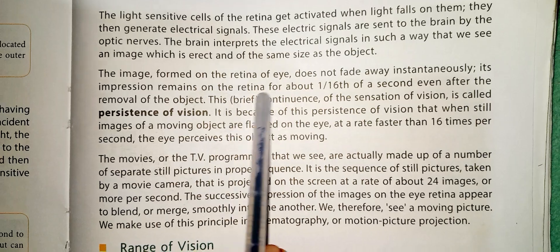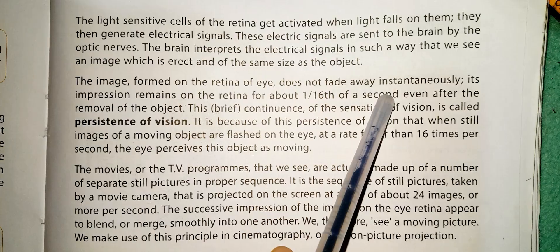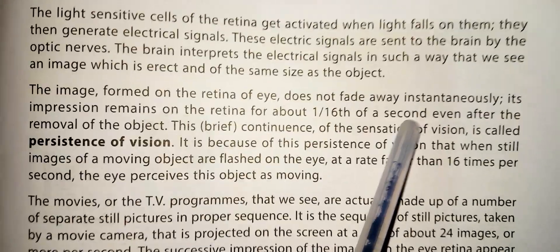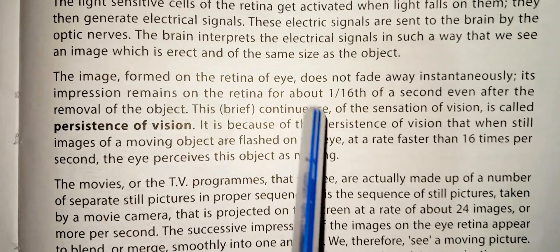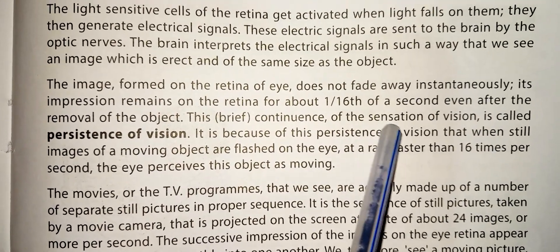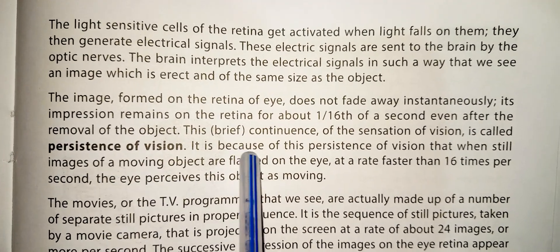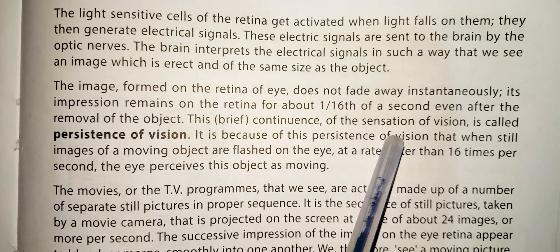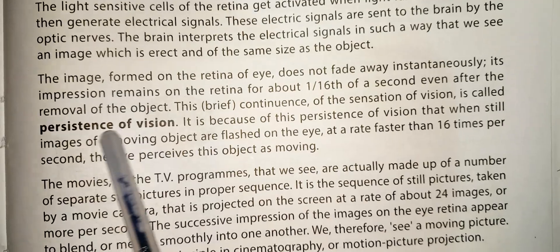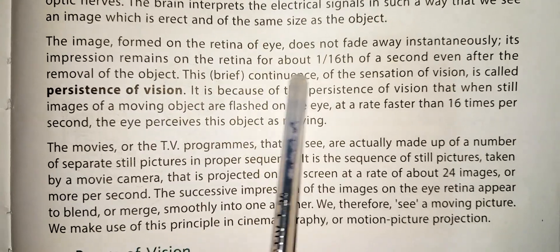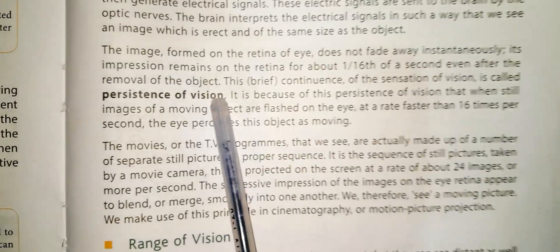The image formed on the retina of the eye does not fade away instantaneously. Its impression remains on the retina for 1/16th of a second, even after the removal of the object. This brief continuation of the sensation of vision is called the persistence of vision.